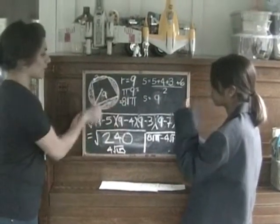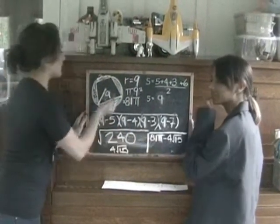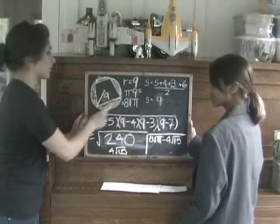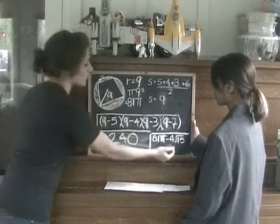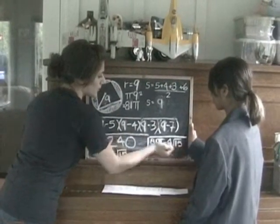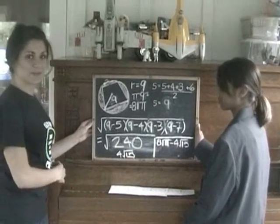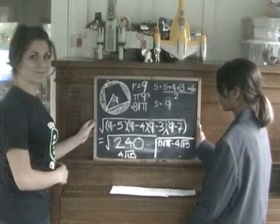Then, you take the area of the circle, which is 81 pi, minus the area of the quadrilateral, which is 4 root 15, which is your answer. Thank you, Assistant. This is my formula.